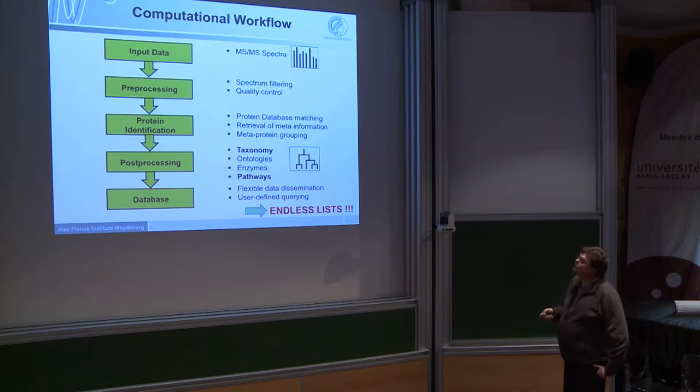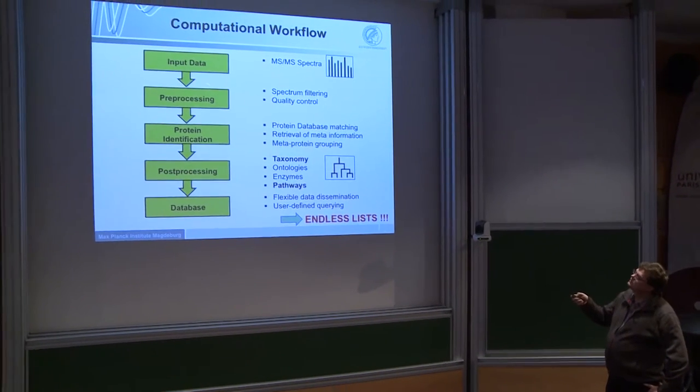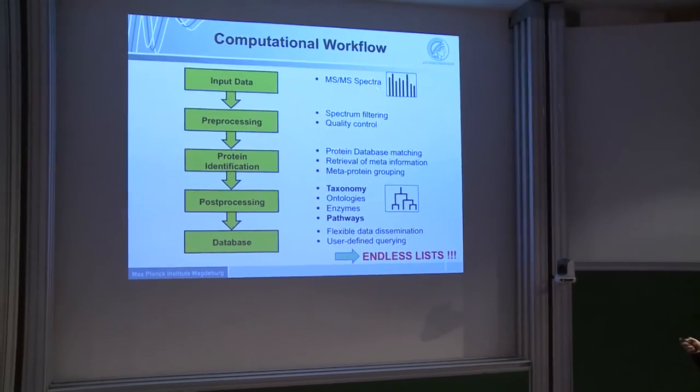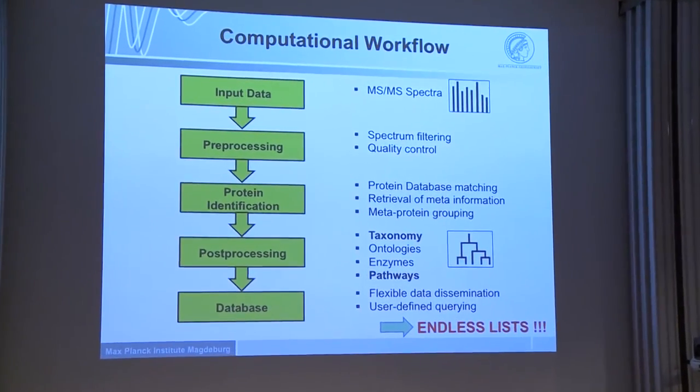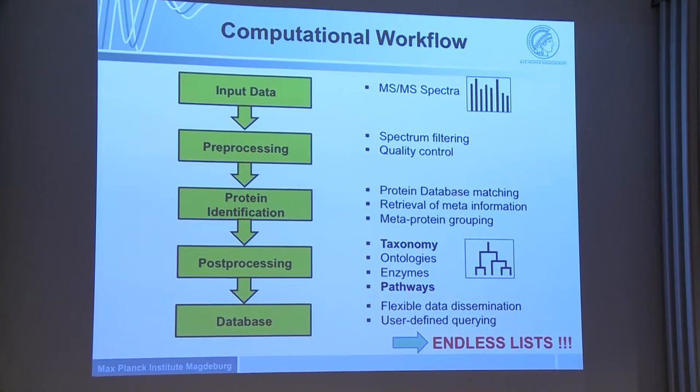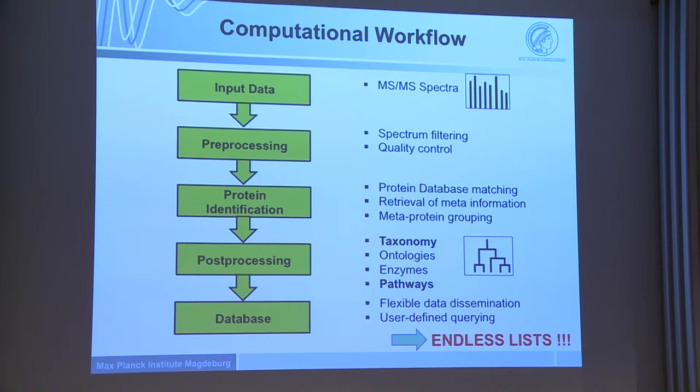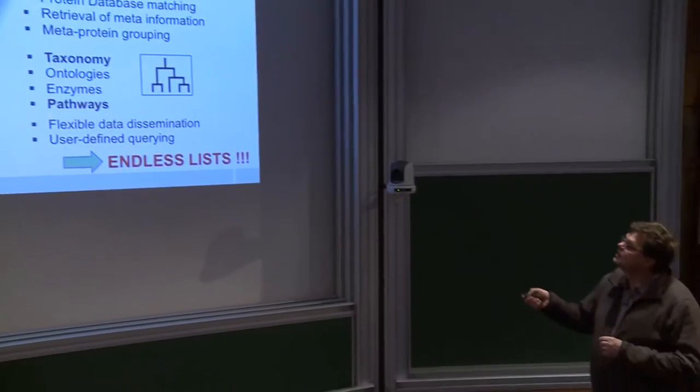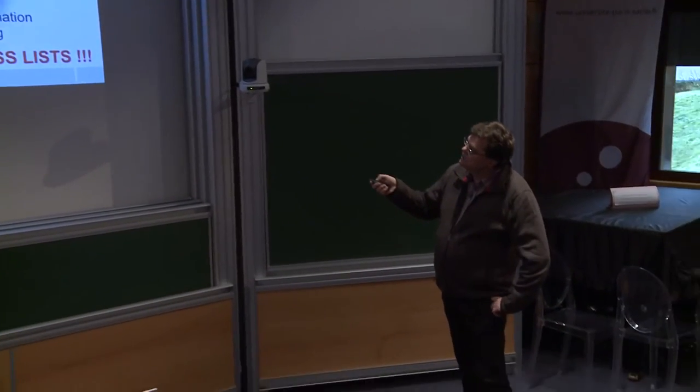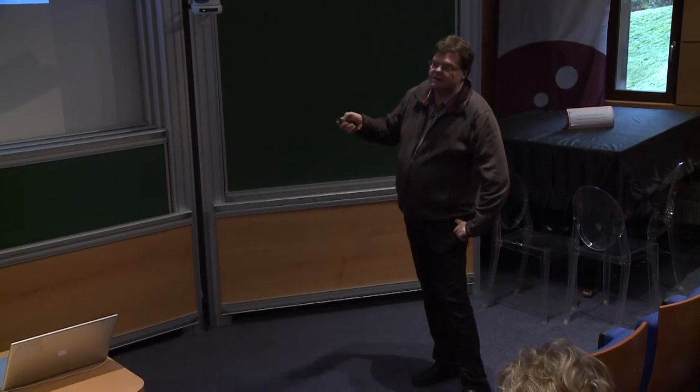The typical workflow for such a community analysis: you have some input data, which are the spectra. You do some filtering, quality control. Then you match protein databases, but you can also match genomic information. Then you retrieve meta-information, meta-protein grouping, and then post-processing. We are mainly interested in taxonomy. You cannot go down to the species level, you end up usually at the family or the order level. We're interested in ontologies and enzymes, and in particular also in the pathways involved.